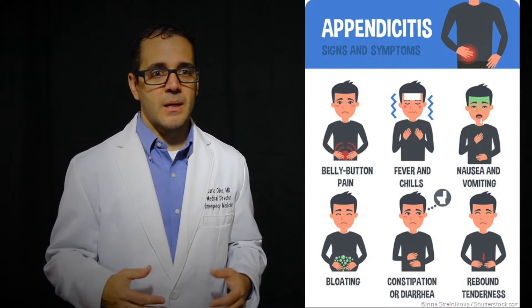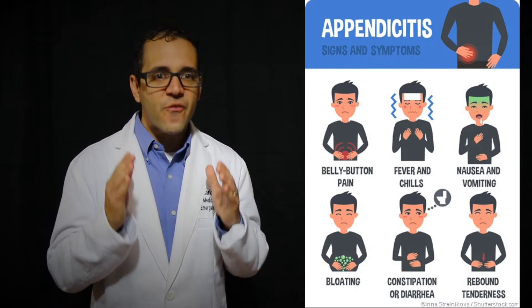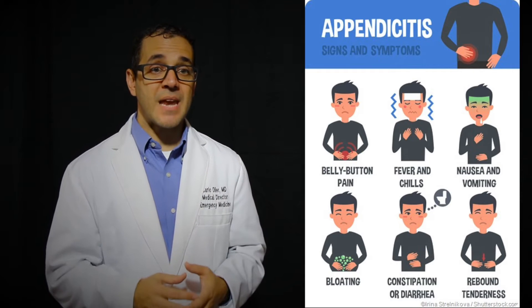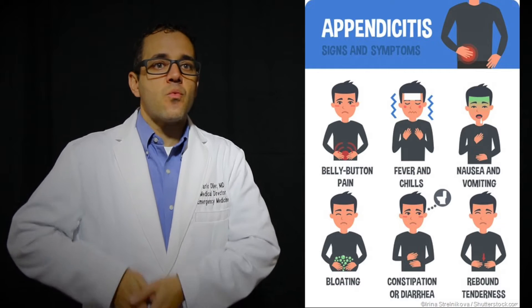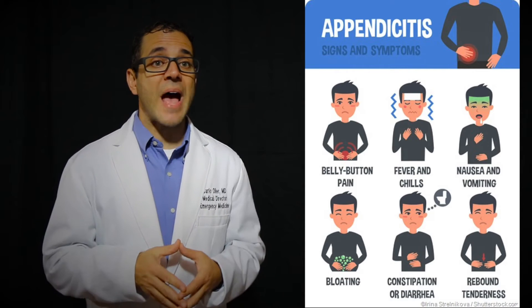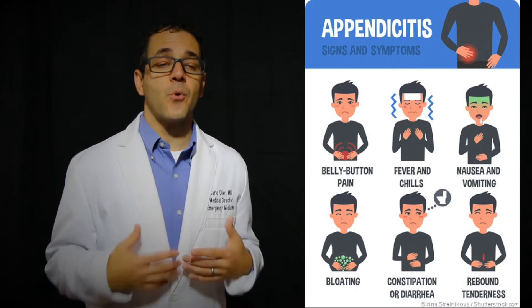Belly pain or abdominal pain. In older children and teens, belly pain is usually the first symptom. The pain might start around the belly button and then move or migrate to the right lower abdomen. Children can also have belly pain that gets worse when they cough or when they hop or move.